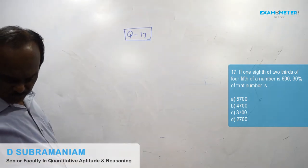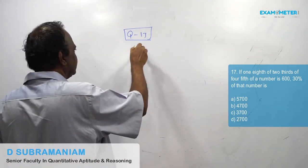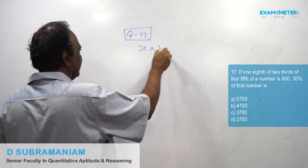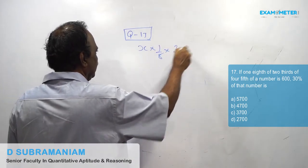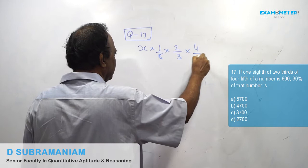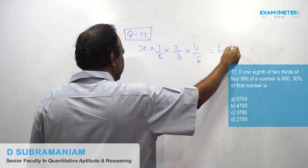One-eighth of two-thirds of four-fifths of a number is 600.